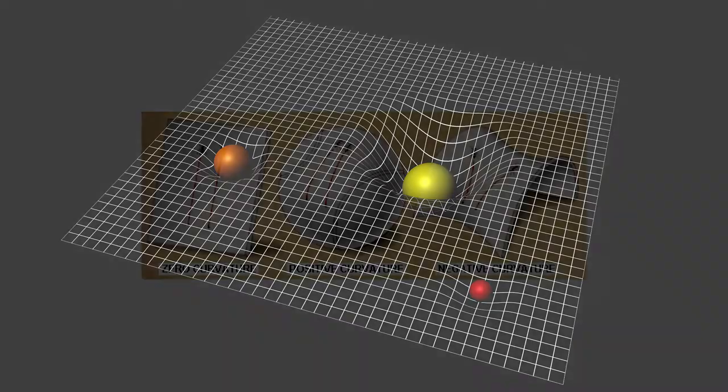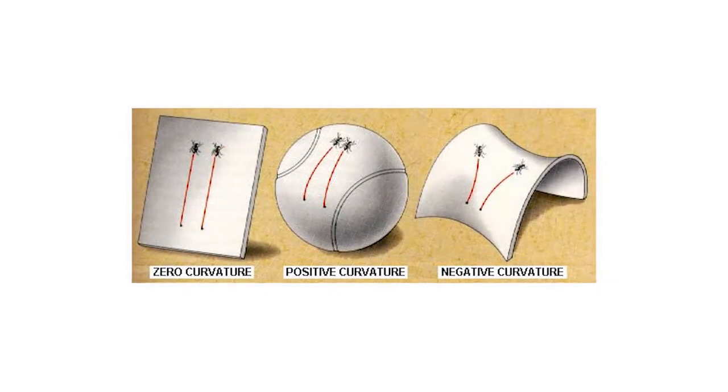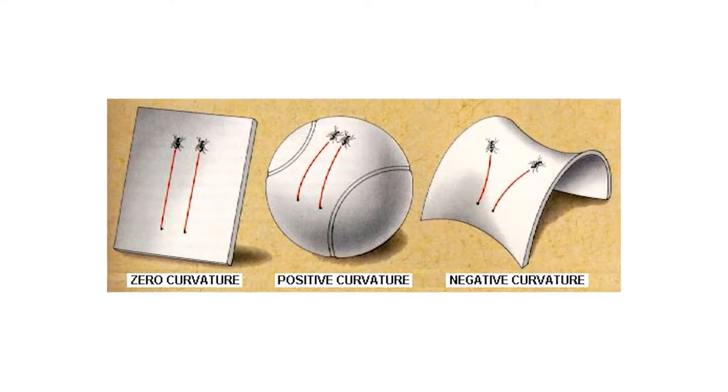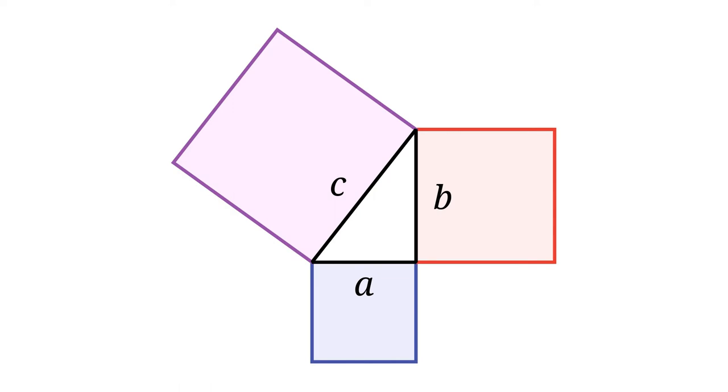But what do we mean when we're talking about the curvature of space? We mean how to properly do geometry, how to calculate distances, how trigonometry works, whether the Pythagorean theorem holds. If the Pythagorean theorem holds, we say that space is flat. This is the easiest case for cosmologists to study. Geometry is easiest then, but it doesn't have to be true.